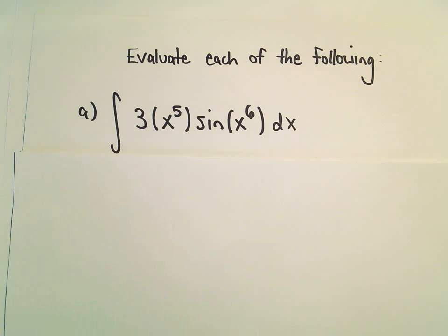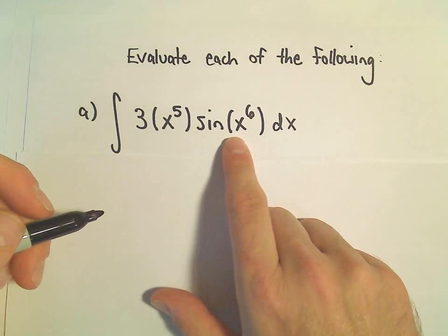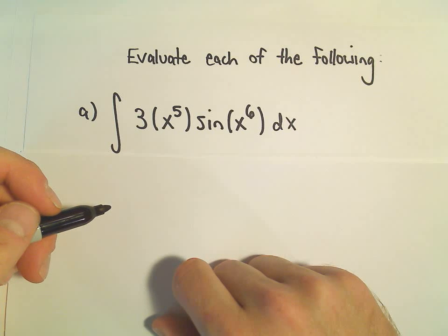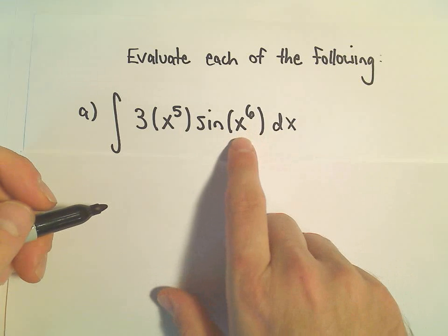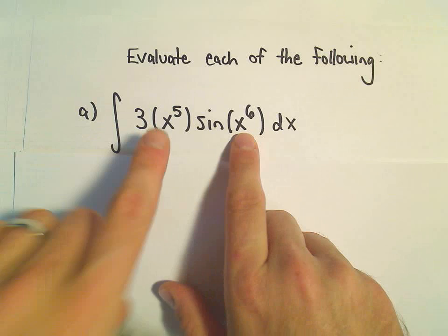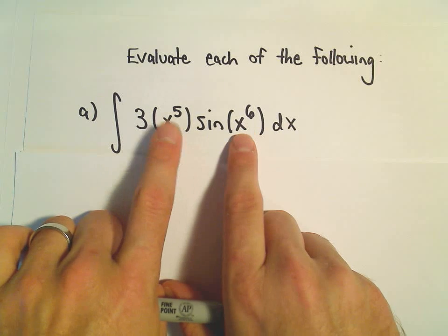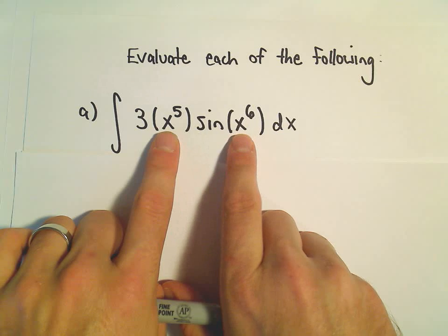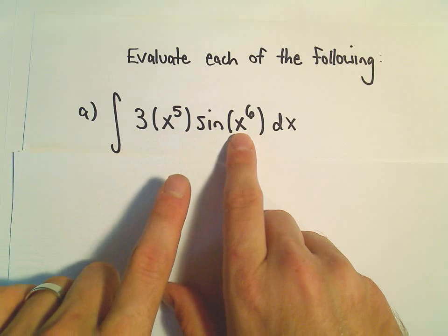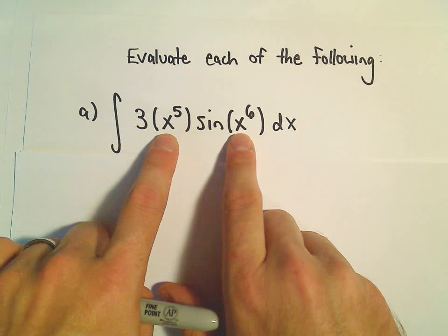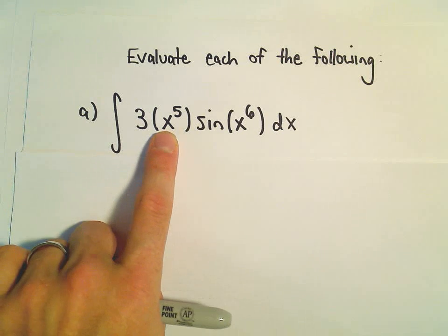We've got 3 times x to the 5th times sine of x to the 6th. I kind of recognize two things. First off, I see this x to the 6th in parentheses, and then I see this x to the 5th, and those are off by a degree of 1. So that makes me think u-substitution might work because if I pick u to be the higher-powered thing, the du will hopefully bump down and take care of the lower-powered part.